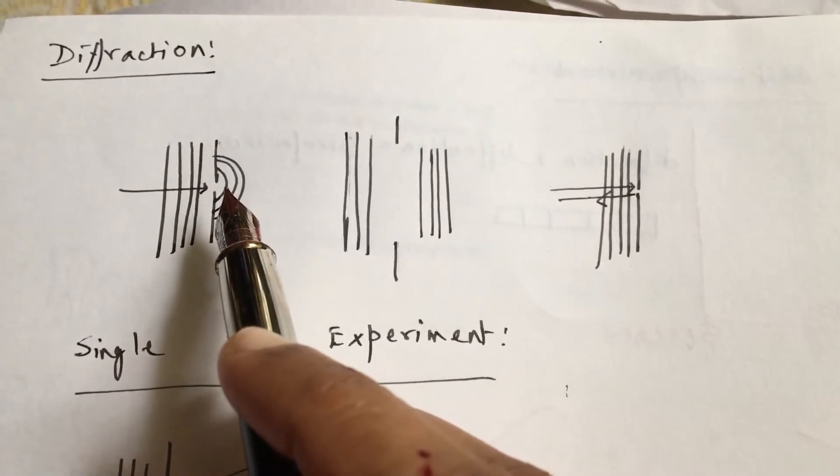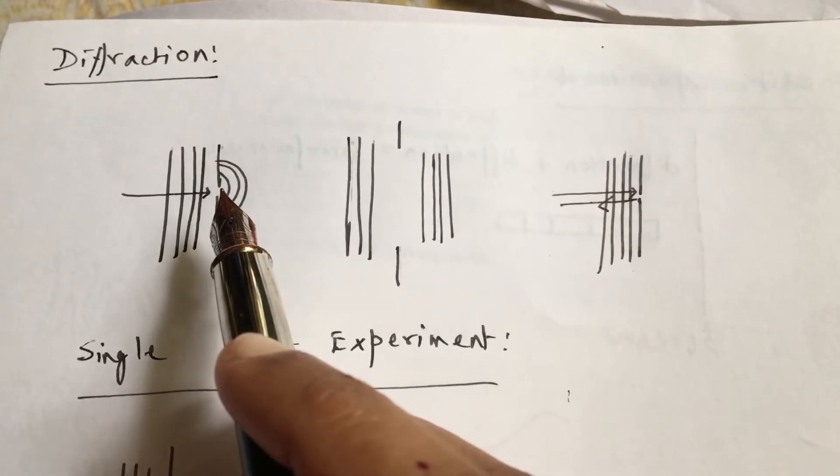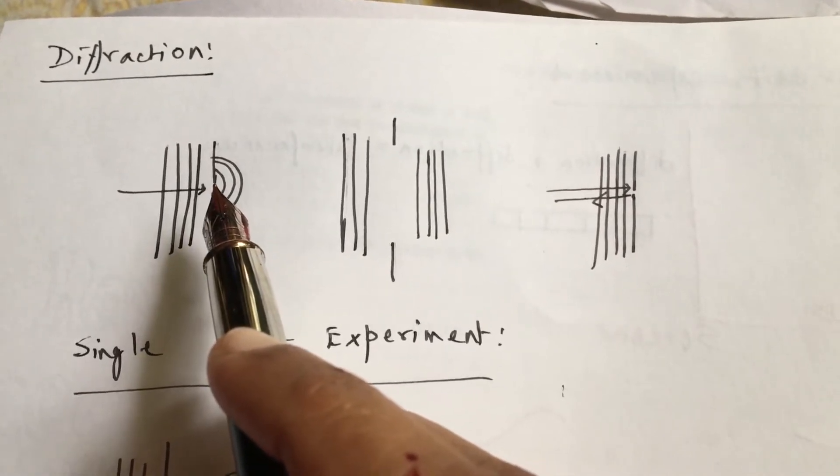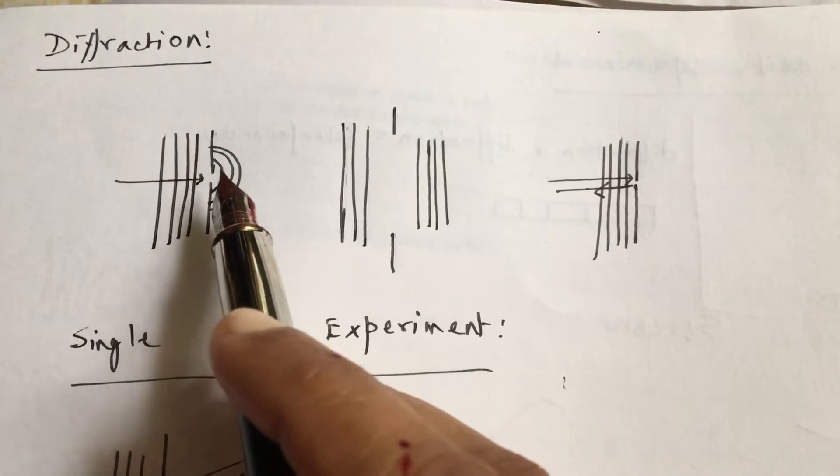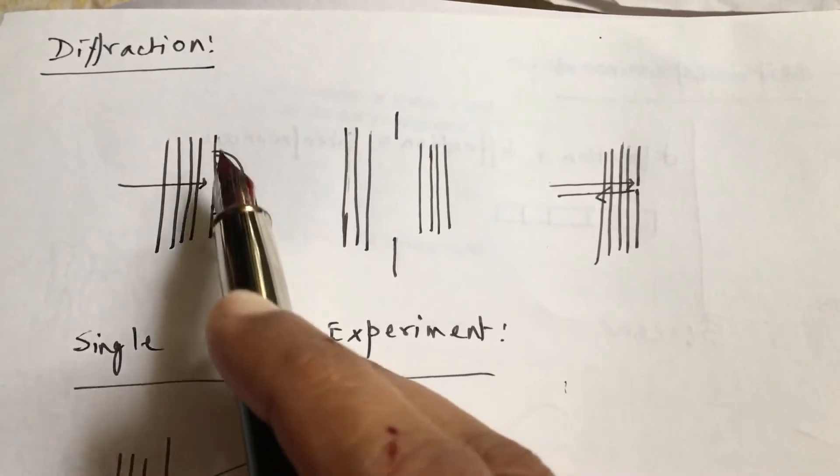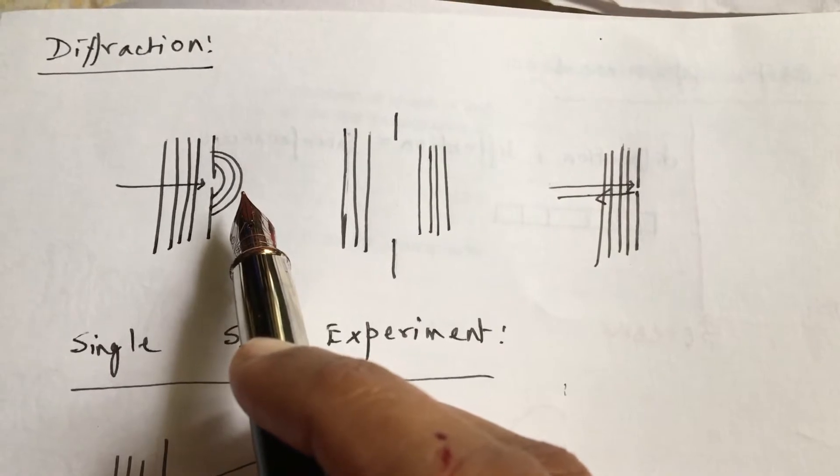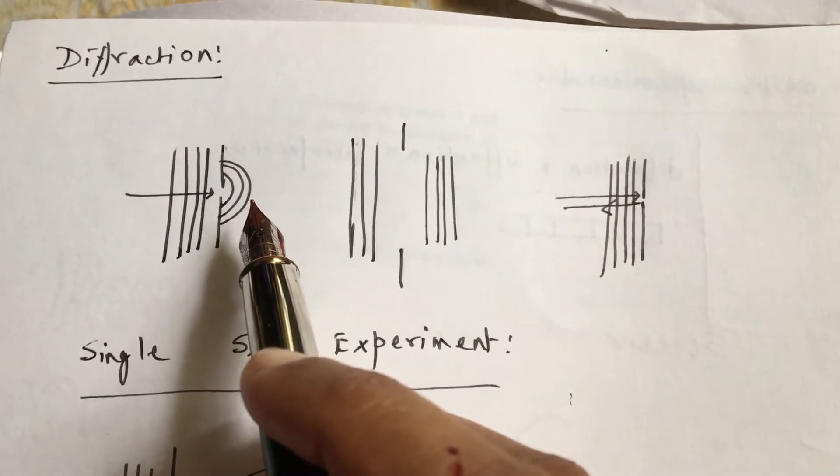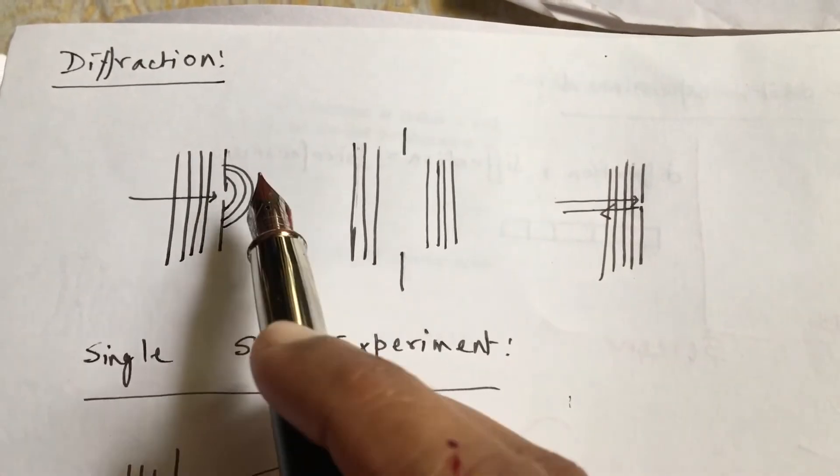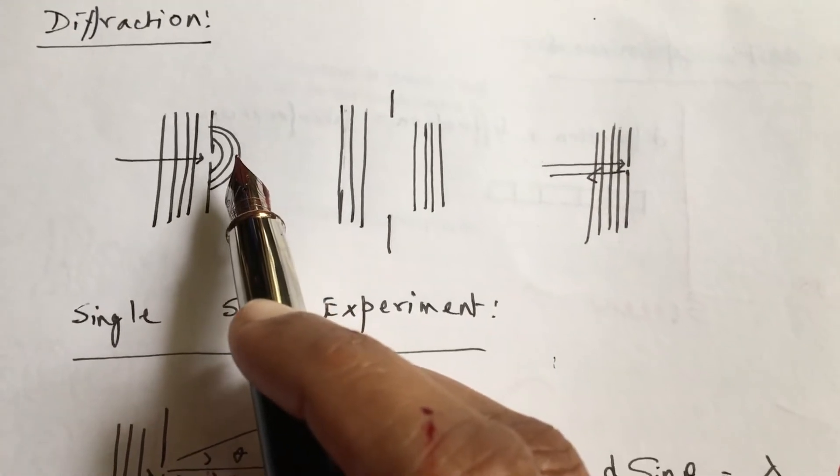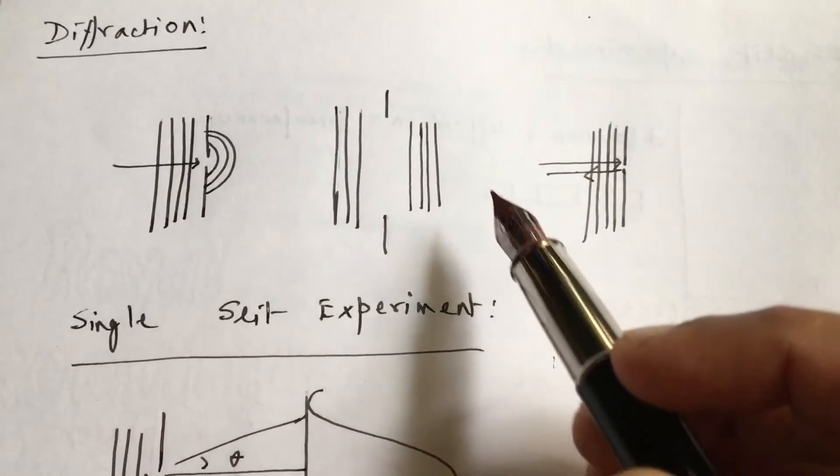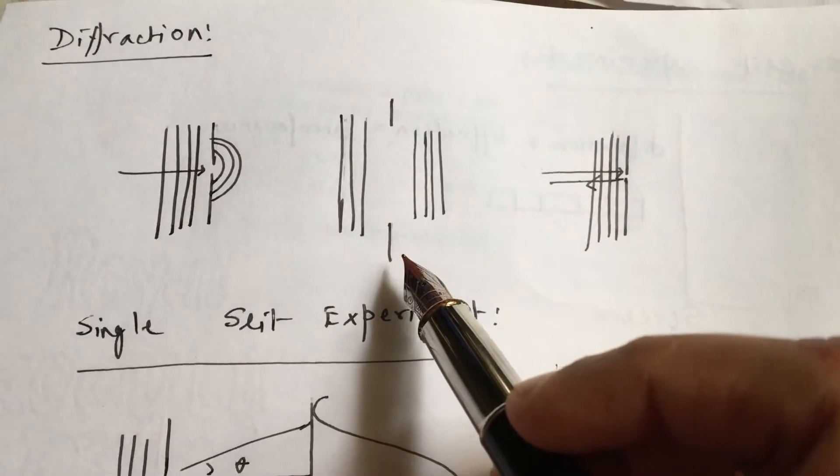We get a diffraction pattern after the light passes through the slit. We see high intensity, low intensity, high intensity, low intensity - this is a diffraction pattern.